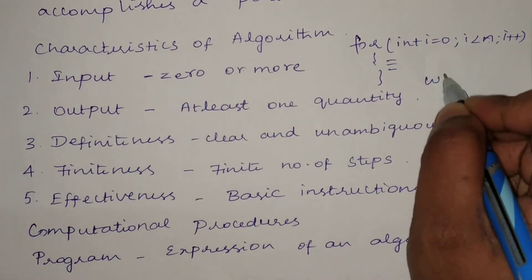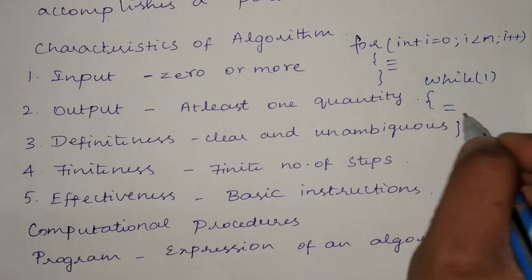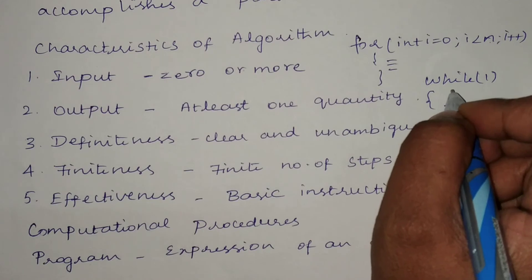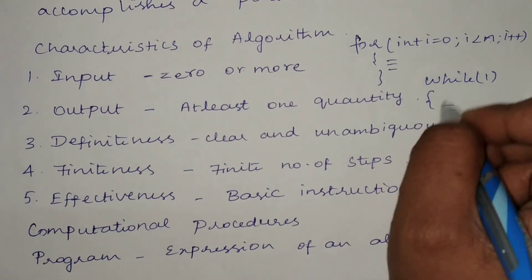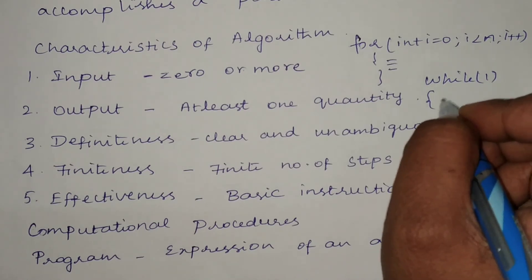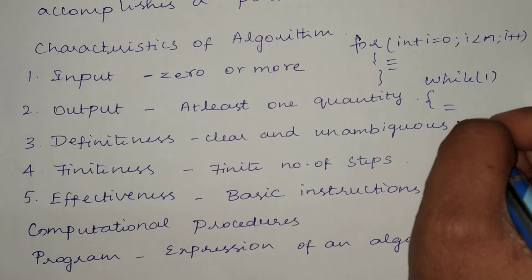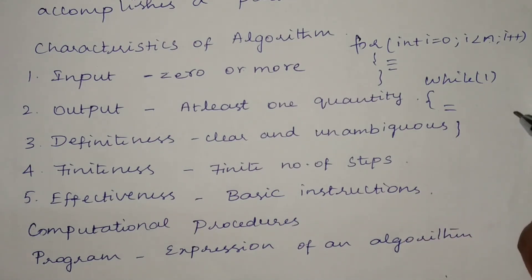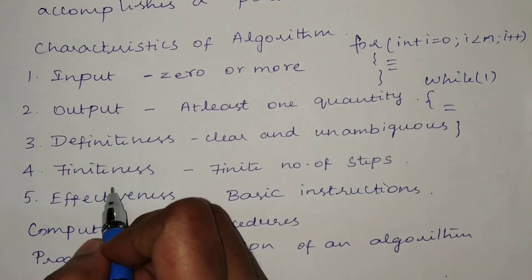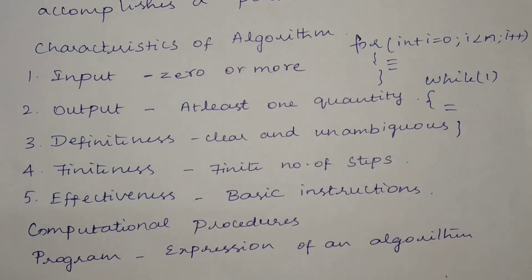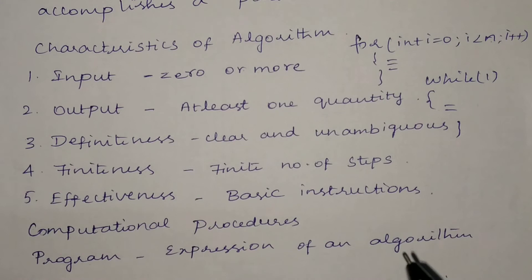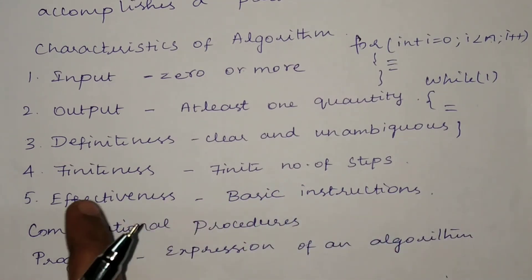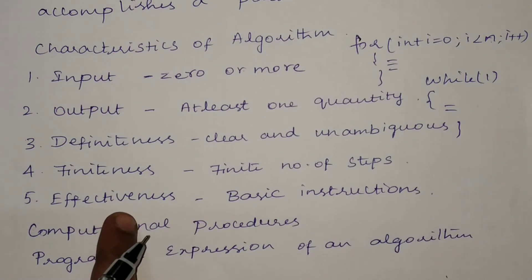In contrast, a while(1) loop always returns true, meaning the loop executes indefinitely. We cannot know in advance how many times it will execute, so it violates the finiteness criteria. Such instructions must not be included in an algorithm. All instructions in your algorithm must execute within a finite amount of time.